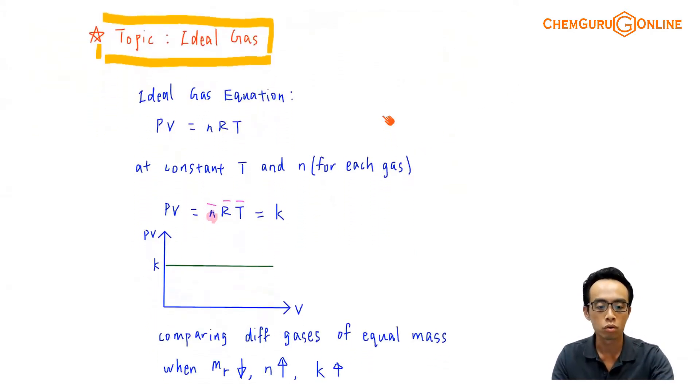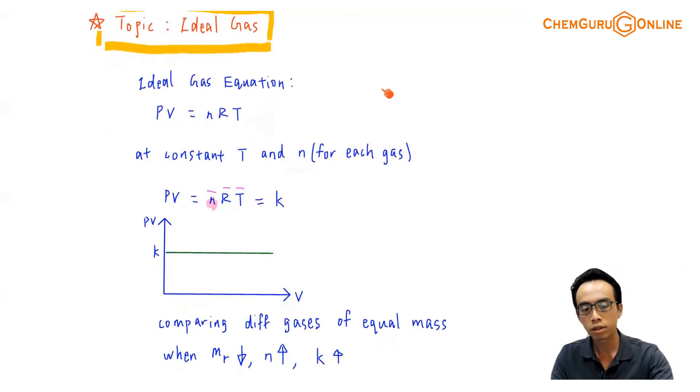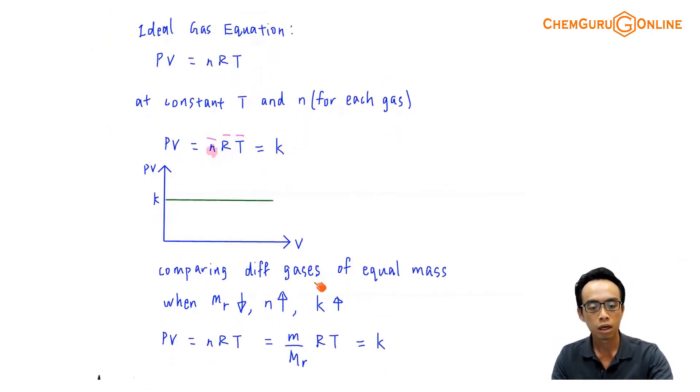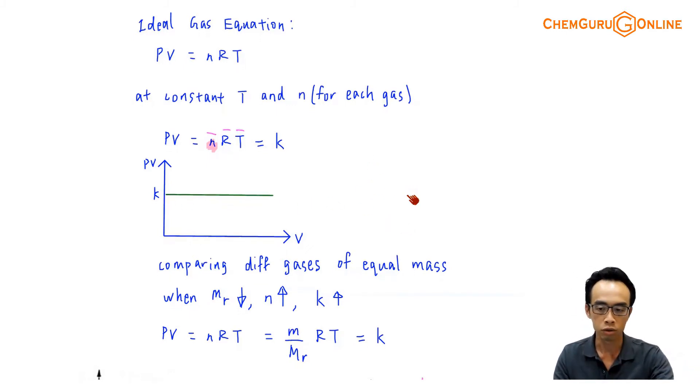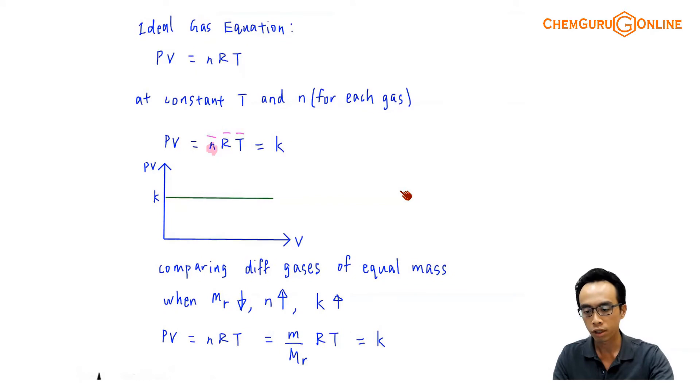Now, you'll notice, if I'm comparing all these different gases N2, CH4, Cl2, neon, if the mass is the same, then what this must mean is the number of moles is different. And how do we consider when there's a change in the molar mass, how does it affect the number of moles, and in turn, how does it affect the y-intercept, the K value?